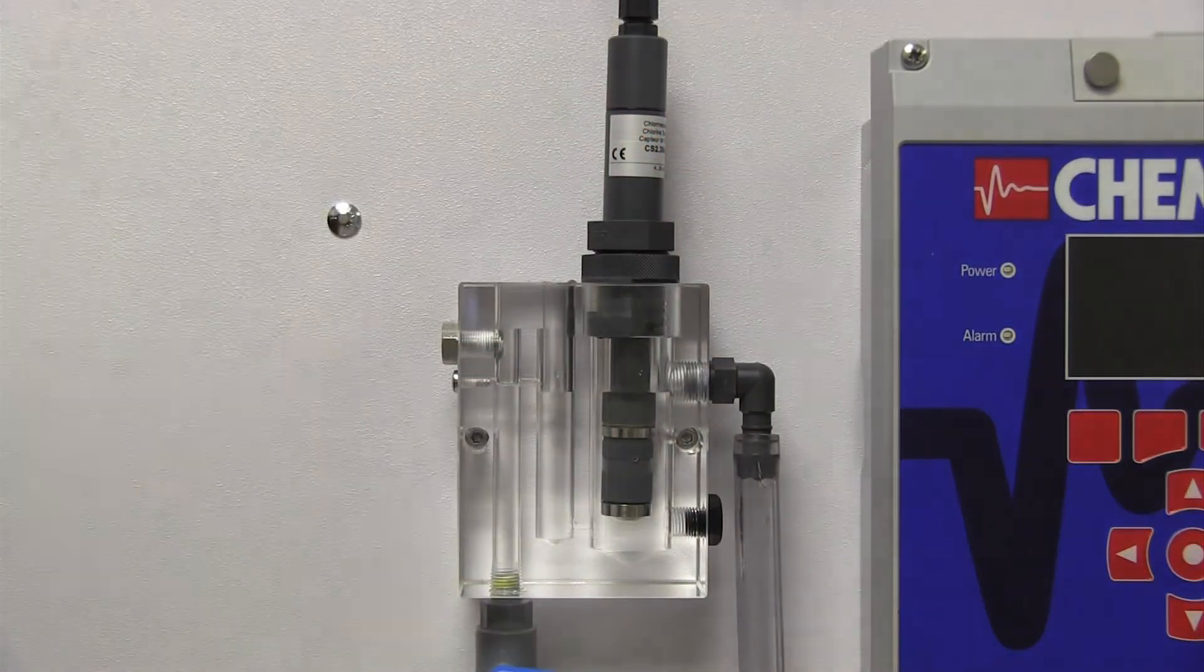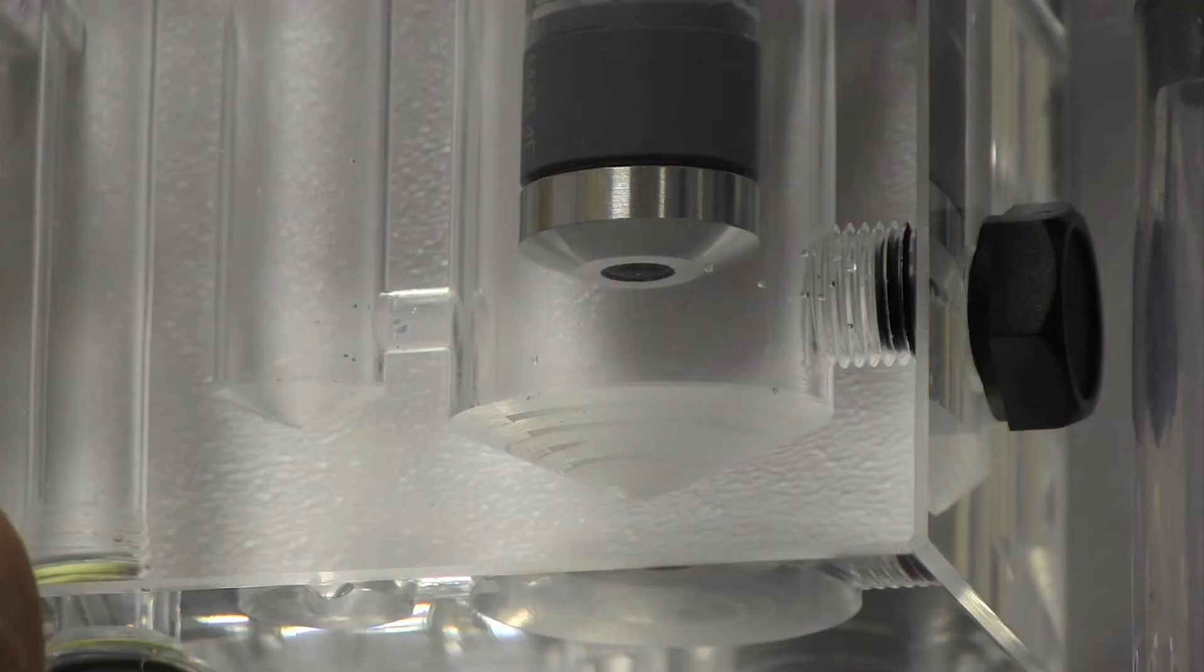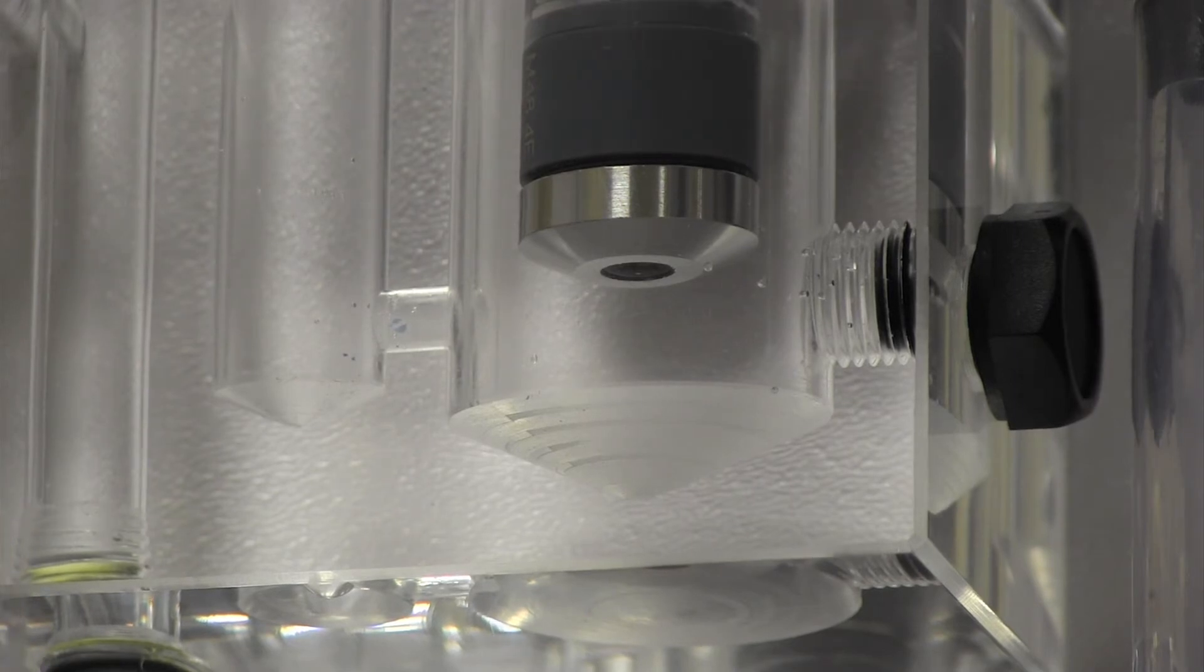Water exiting this tube needs to pass across the tip of the probe to prevent bubbles from forming on the membrane, which could subsequently impact the accuracy of the chlorine reading.